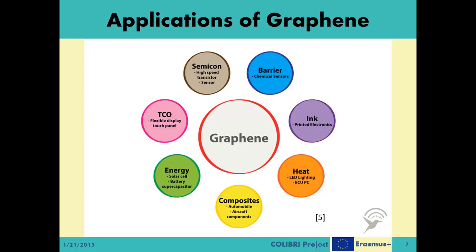There are numerous areas where we can use this material: solar panels and energy storage through battery designs, lightweight and durable composite materials, flexible display touch panels that can be bent and warped, heating systems, chemical sensors that can detect chemical agents, higher quality inks, and lastly, semiconductors for designing smaller and faster transistors.